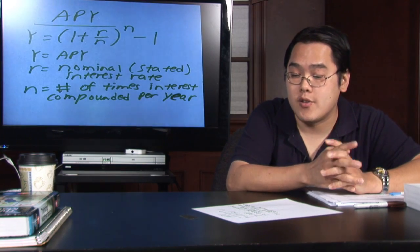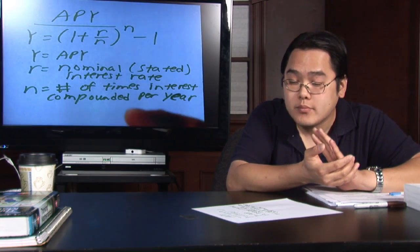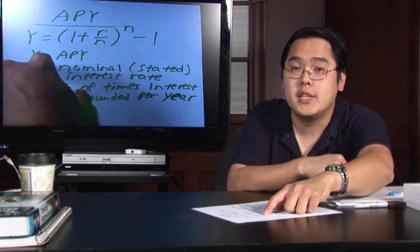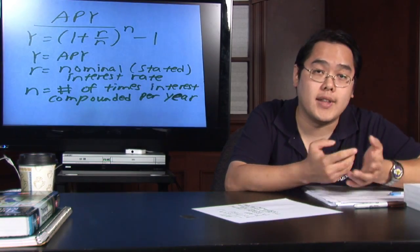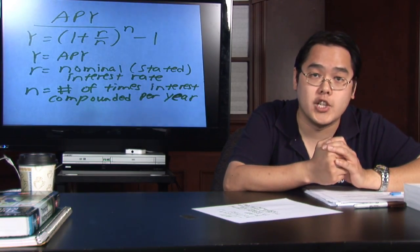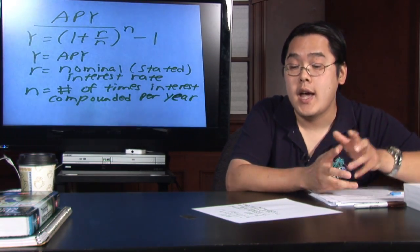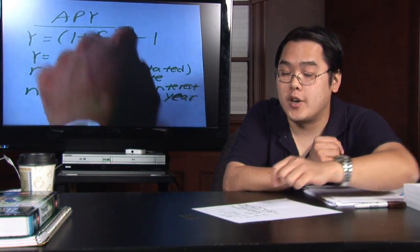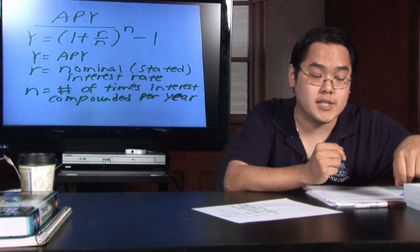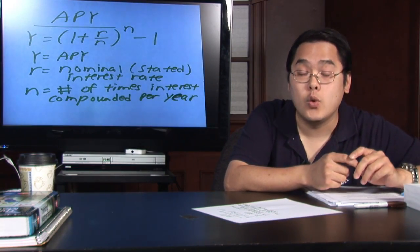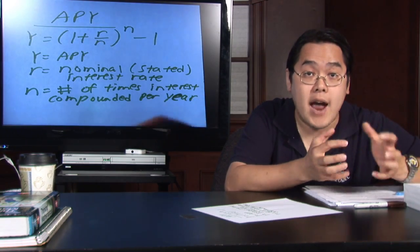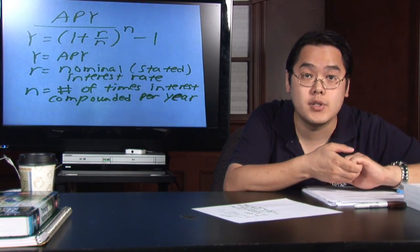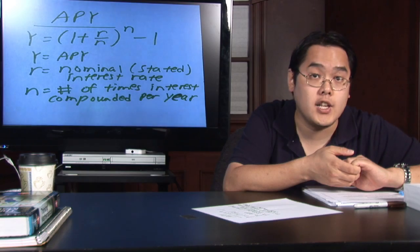Now you may notice here that there are a couple of things to look for. Y stands for the APY — that's the annual percentage yield that you want to find. The R, which shows up in the numerator, is the nominal, which is known as the stated rate — that's the advertised interest rate that you see in magazines, newspapers, and on the internet.